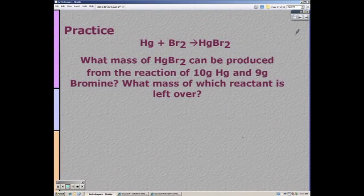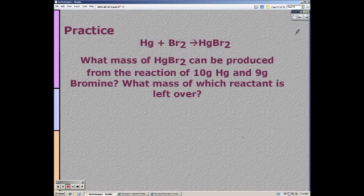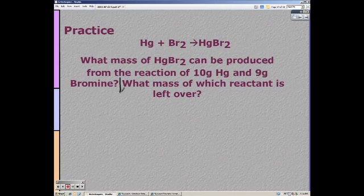Alright, this one actually has 2 questions. They want to know how many grams of mercury dibromide and then how much of the excess is left over. So solve for the first problem and then restart when you have that answer.